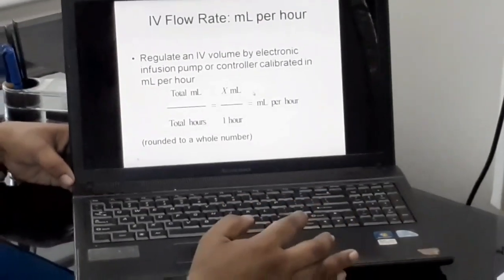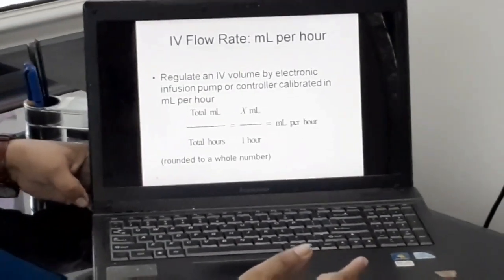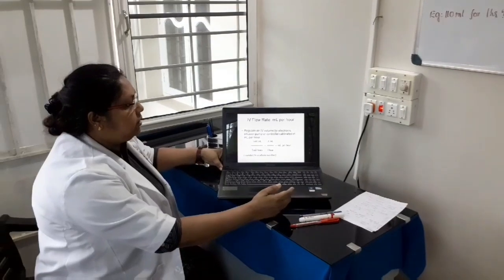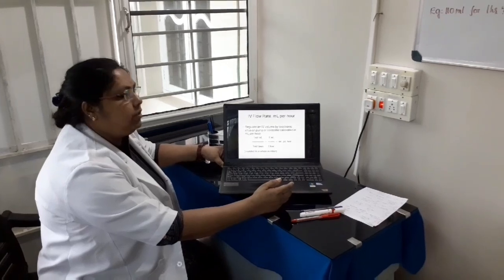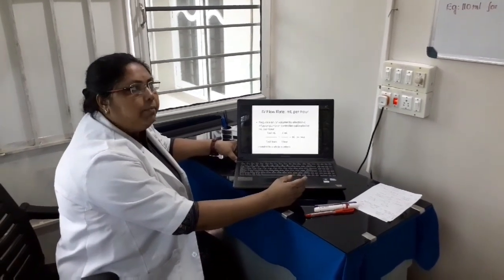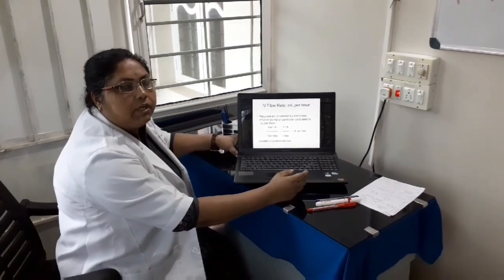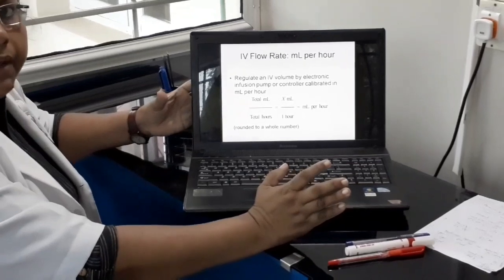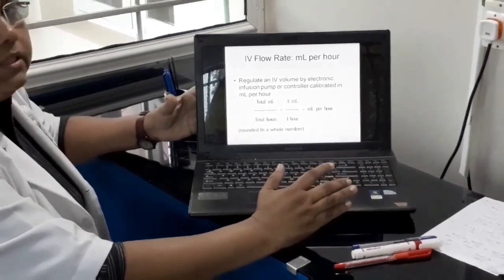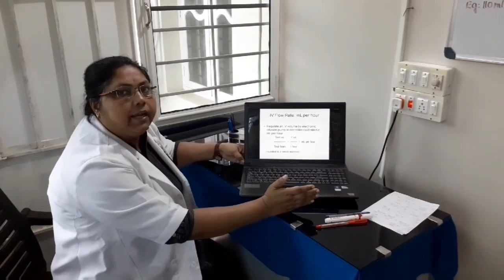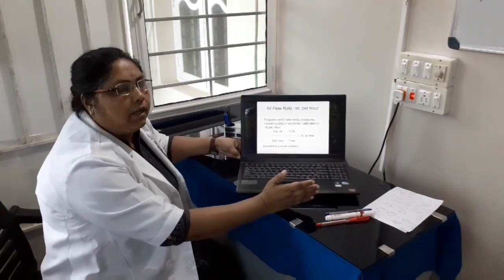If you are giving mechanically through the machine, you have to adjust the rate per hour. Or if you are giving manually, you have to adjust the rate with the drop factor. ml per hour means the total ml divided by total hours. Example, if you are giving 500 ml for 5 hours, per hour 100 ml you have to adjust in the machine.